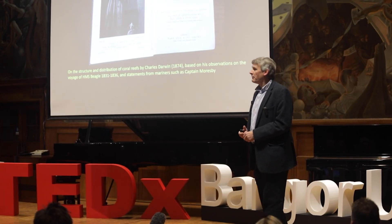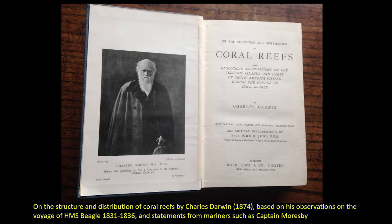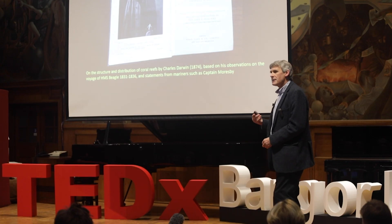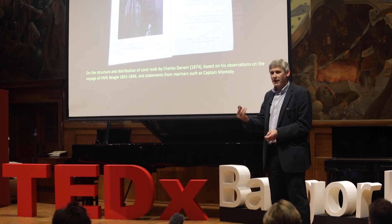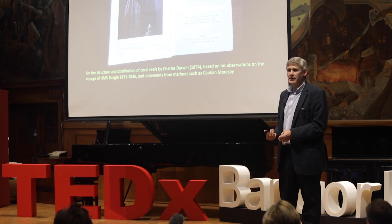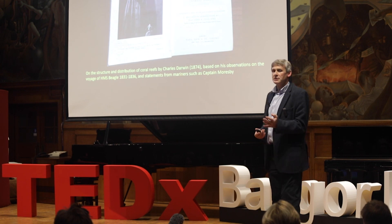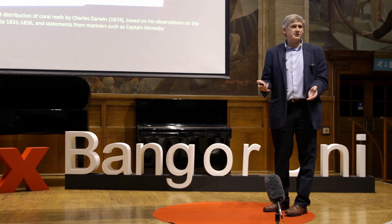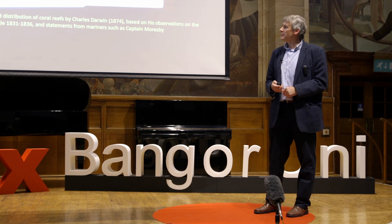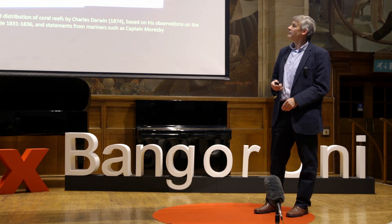Charles Darwin not only wrote The Origin of Species, he wrote The Structure and Distribution of Coral Reefs. My copy was published back in 1874, based on observations Darwin made on his voyage on the Beagle — its homeward journey from the South Pacific past islands like Tahiti, through the Great Barrier Reef, and then across the Indian Ocean past coral atolls to the island of Mauritius. He also looked at statements from mariners, one being Captain Moresby, important for some of the places we'll visit this evening.